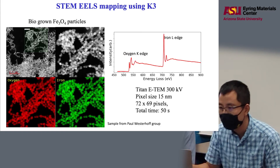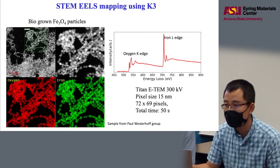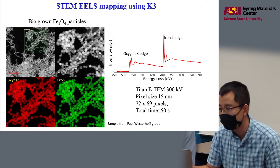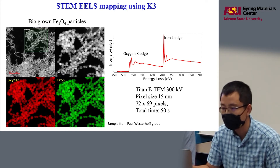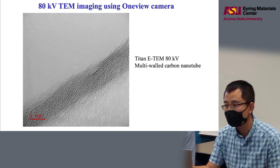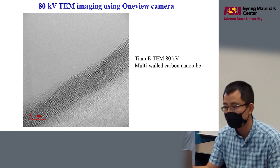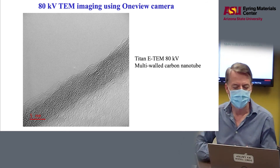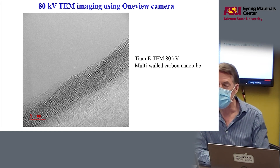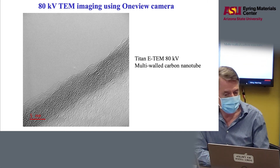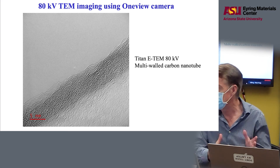Here is another example using the K3 for biogrown iron oxide particles. Here is the typical EELS spectrum of oxygen and iron, and we can quickly get this result within about 50 seconds, showing a beautiful distribution of the elements. Here is another example using 80 kV TEM to image beam-sensitive carbon nanotube materials — we can get atomic resolution with the help of the aberration corrector. For this example, we are not using the K3; we are using the other CMOS camera, which has much better sensitivity at 80 kV but not at 300 kV. That is why we have both sensors.